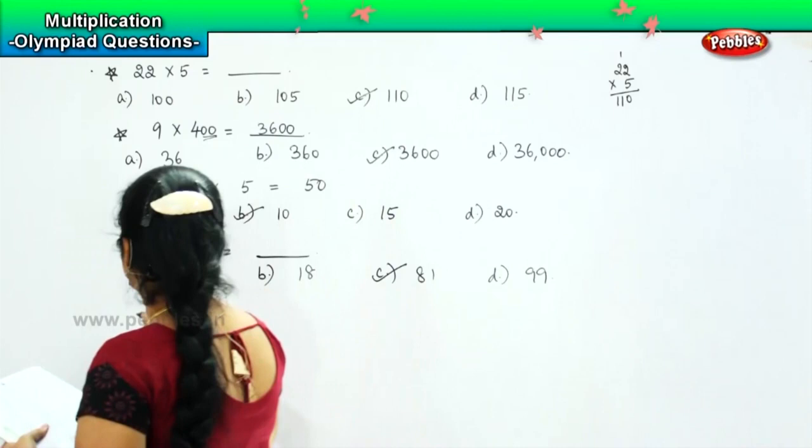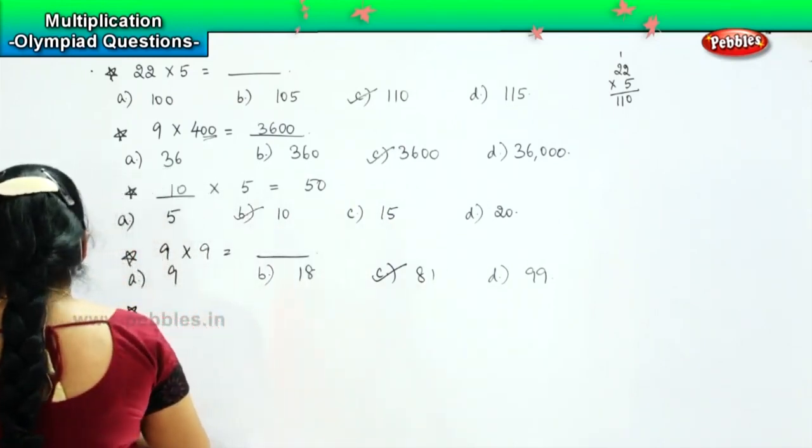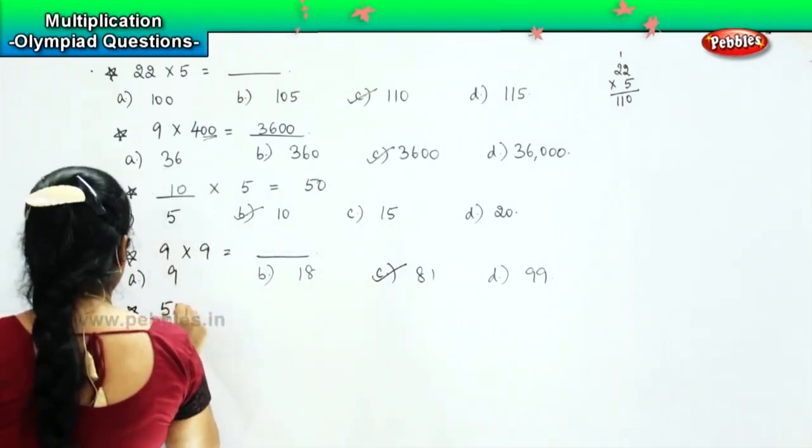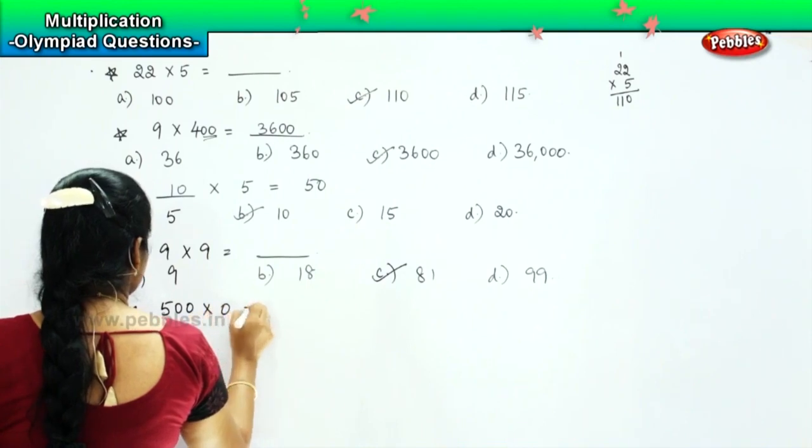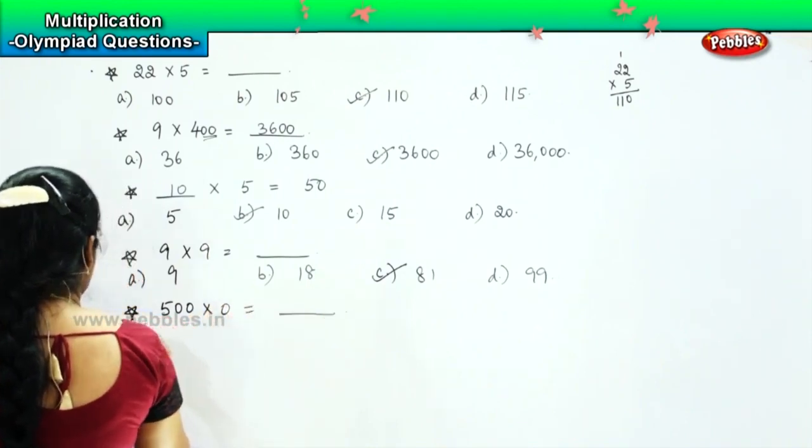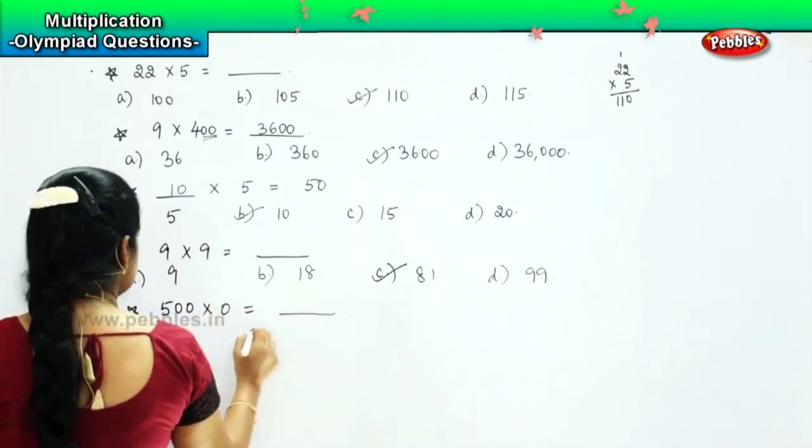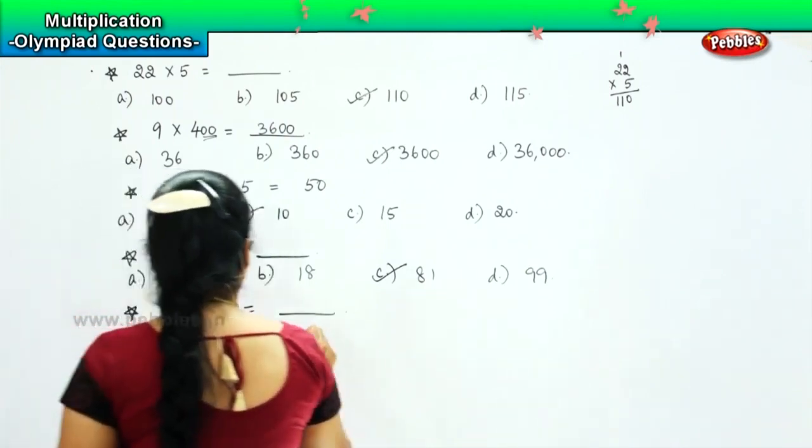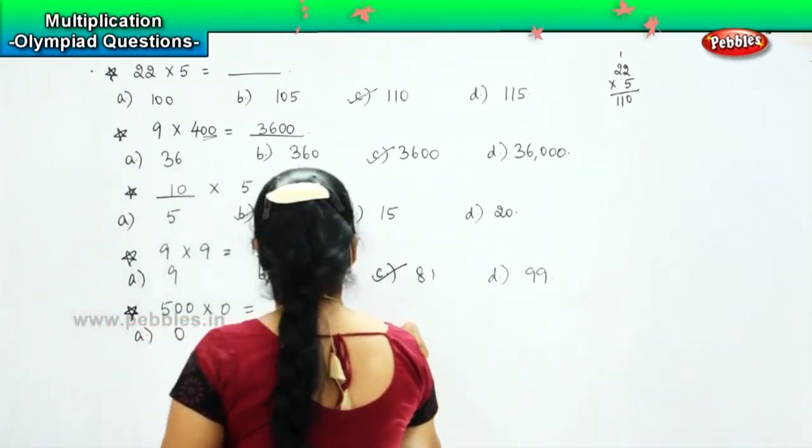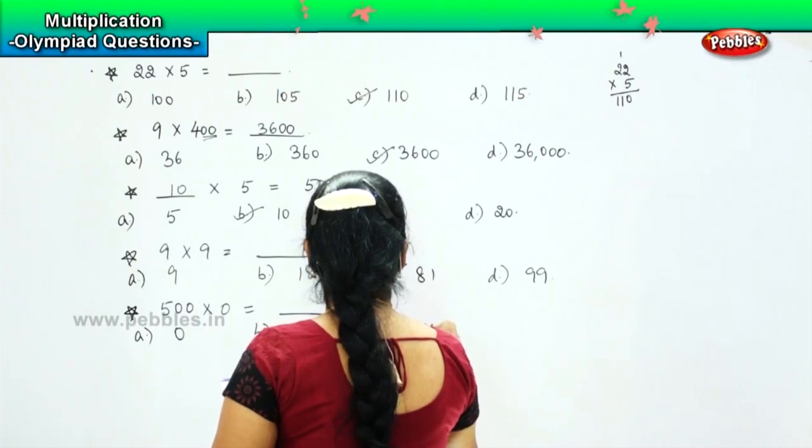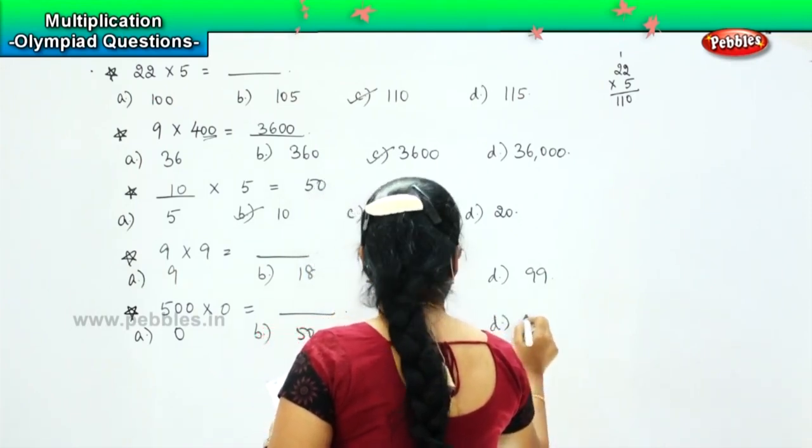So here is your next one. The next question says 500 into 0 is equals to dash and your options are A 0, B 50, C 500 and D 1.